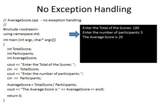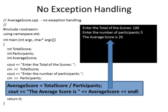Here is a sample program that is written without exception handling. The program is set up to determine an average score. The inputs are the total score for all the participants and the number of participants. The program then divides the total score by the number of participants to come up with an average score and then displays that average score on the screen.